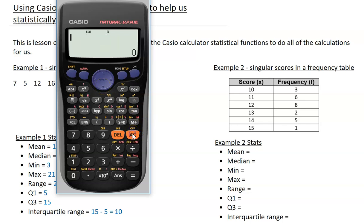So again we clear it and we access our stats options, so shift 1. Again, first thing we want is our mean, so we'll go to 4 VAR, option 2, and that gives us a mean of 12.12.